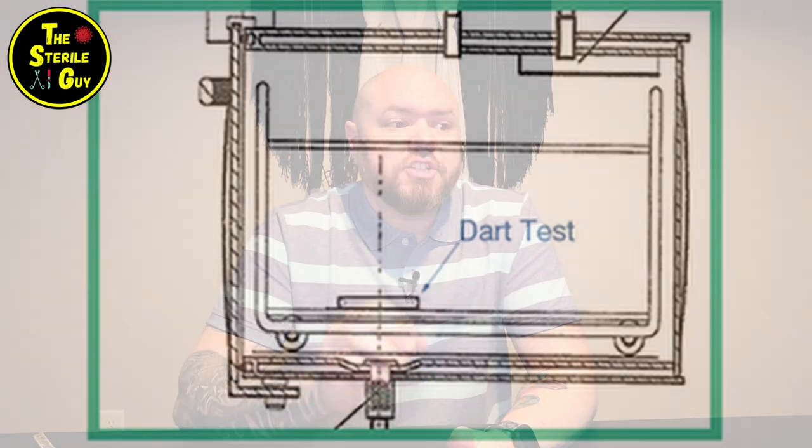Lastly, I want to show you where the air removal test goes inside the sterilizer. It should go in the bottom closest to the drain, and this is for several reasons. One, that is the coldest part of the sterilizer. Two, steam actually has less density and rises above air, so if steam collects in the top of the chamber it's pushing air down. So if there's going to be any air in the sterilizer, it's going to be at the bottom — and that, my friends, is an air removal test, which you must perform at least daily.